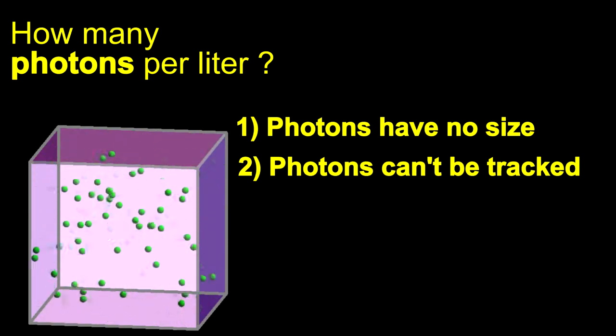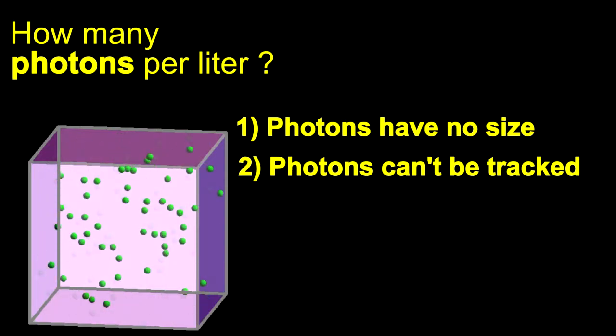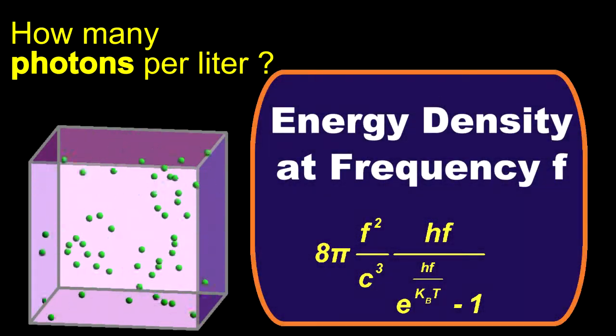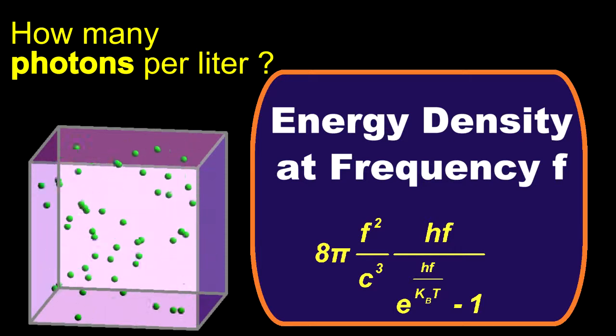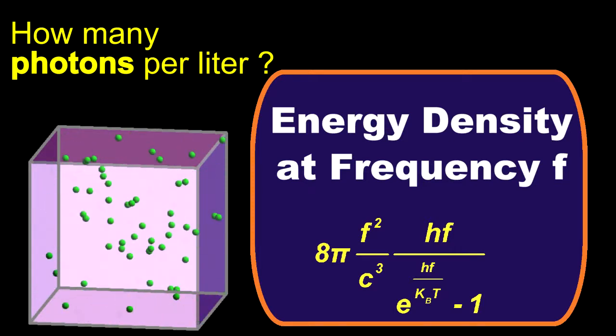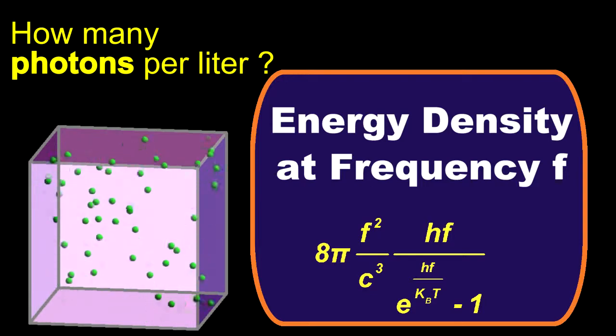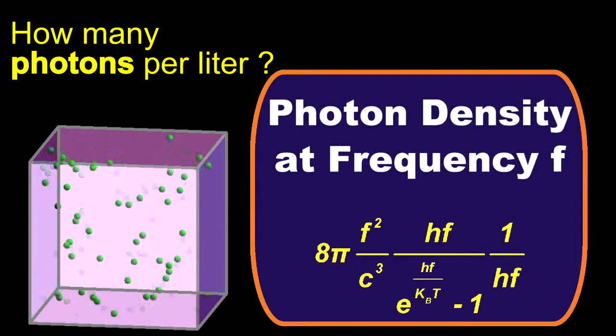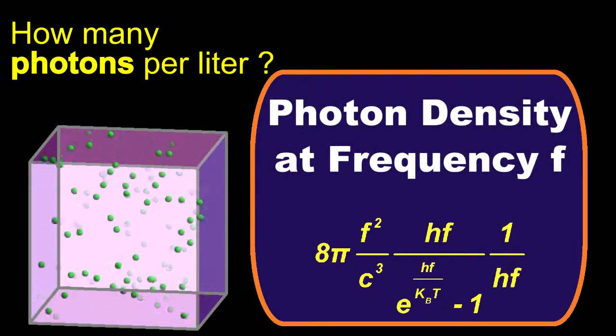We will use our theory of black body radiation to calculate how many photons would be in a liter. Begin by recalling Planck's formula for the energy in the cavity as a function of frequency. Since each photon has energy HF, the number of photons as a function of energy is just the above equation divided by HF.